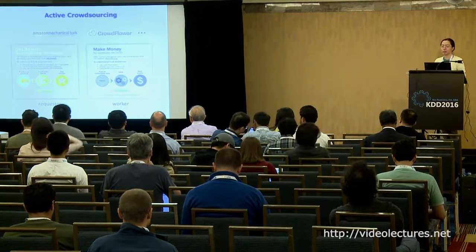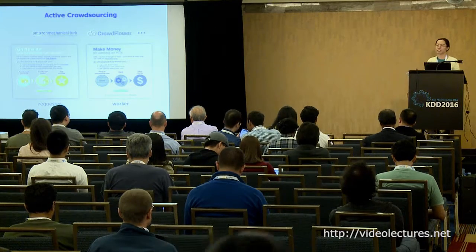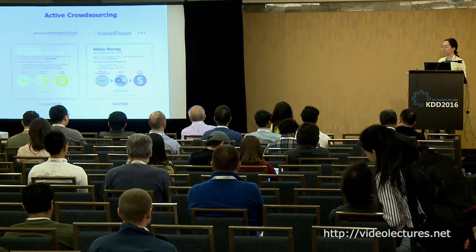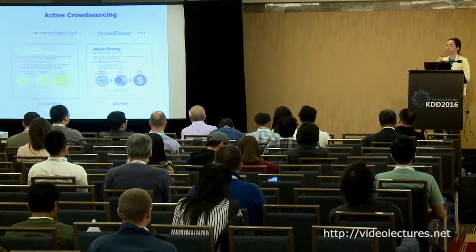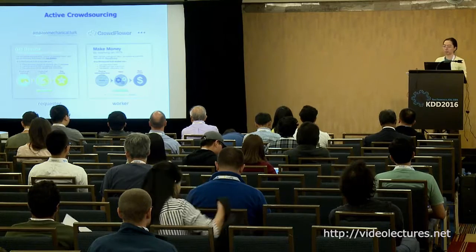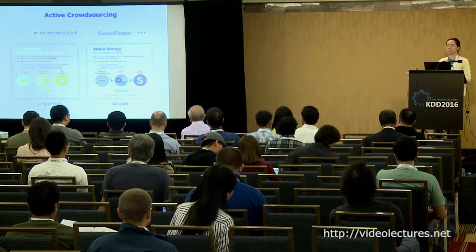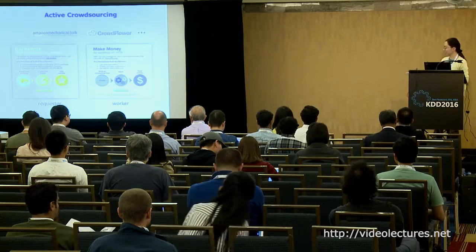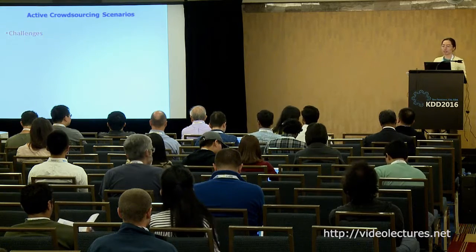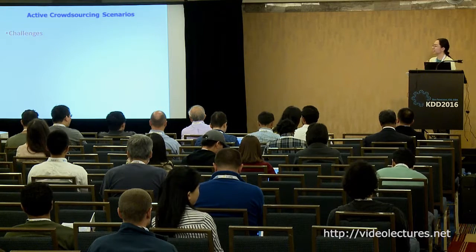The main difference between active crowdsourcing and passive crowdsourcing is the data collection step. In passive crowdsourcing, the data is already there and you just collect and extract it, so you cannot control the data generation step. But in active crowdsourcing, you can actually design the task and sometimes even the platforms to better collect the data. In this tutorial, we will talk about three major topics in the data collection step.